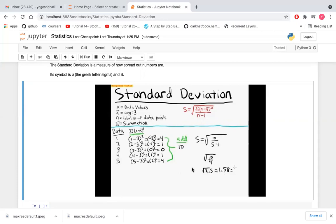...that sample variance value is very far from our data set or our data set range. So what we have to do? We have to normalize it, so for that standard deviation comes into picture.